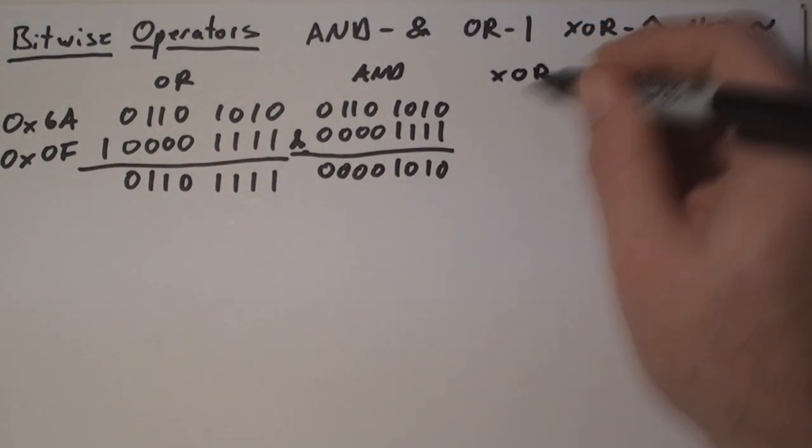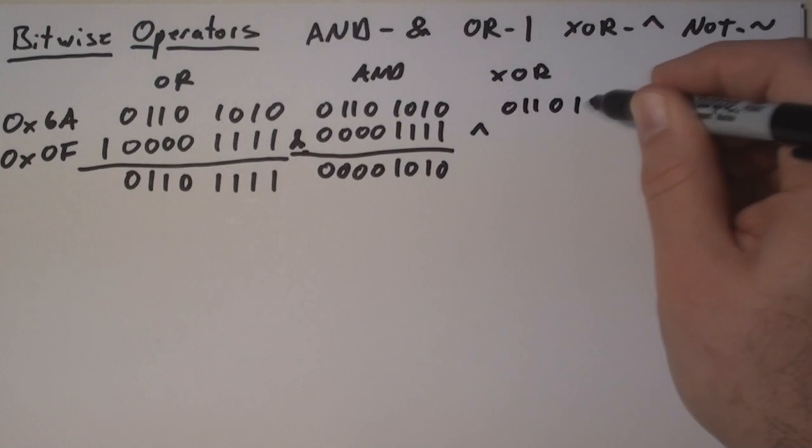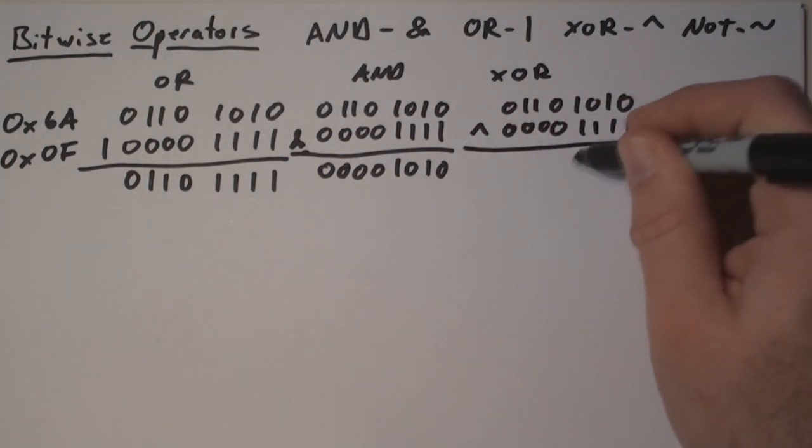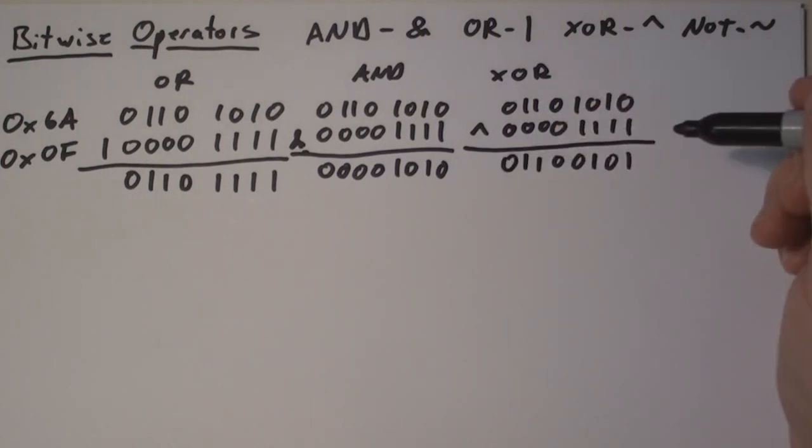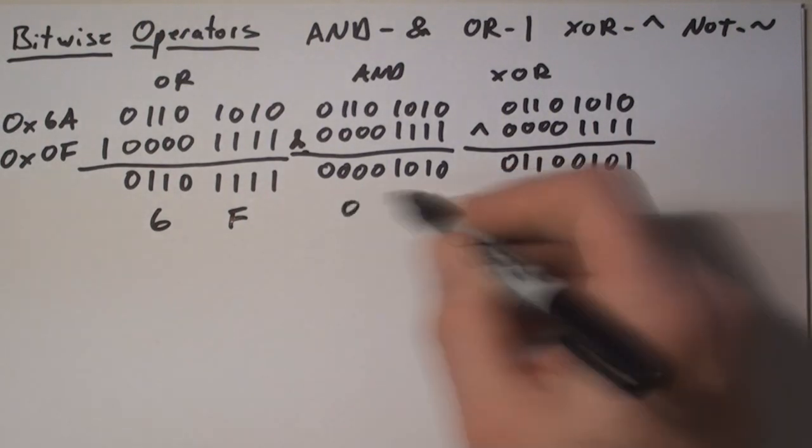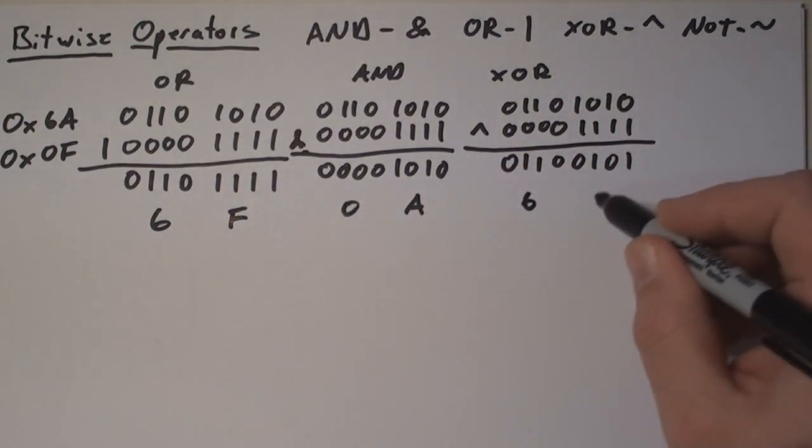The third example is an exclusive OR. Remember, an exclusive OR is 1 when you have exclusively 1 input as a 1. If both inputs are 0 or both inputs are 1, you get a 0 on the output. So the resulting values of the OR are 6F, the AND is 0A, and the XOR is 65.